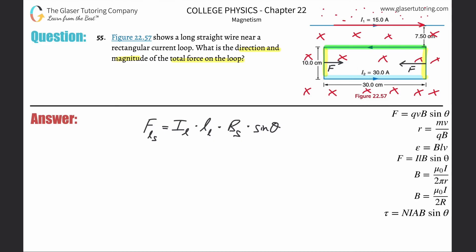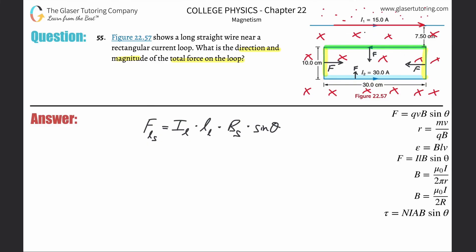These two forces are not the same magnitude, even though they point in opposite directions. The external magnetic field produced by the straight wire on the green (top) segment is larger than on the blue (bottom) segment, because the bottom segment is farther away from the wire. That's what we need to calculate now.